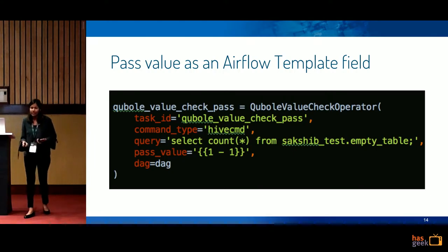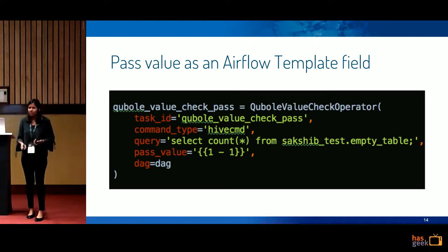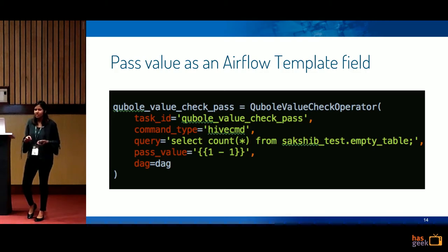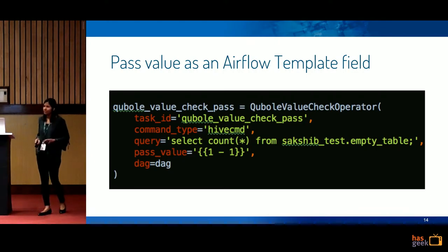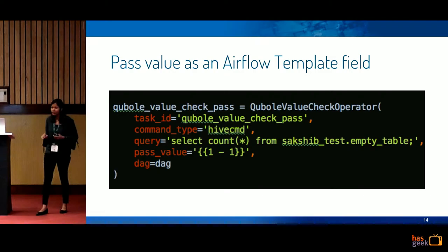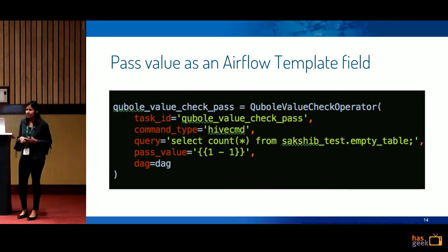This is how you define an Airflow template field. The pass value you see here is a Jinja template — this is a simple demo example. In the actual implementation, we get this value from another operator at runtime, which allows us to compare data across engines.